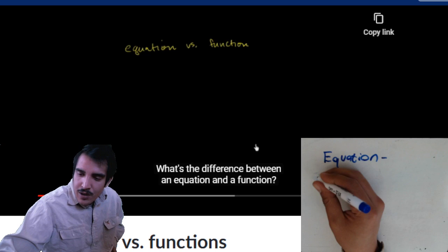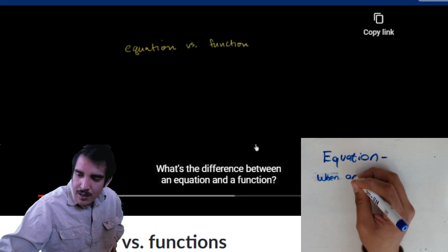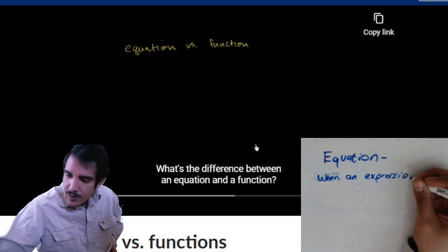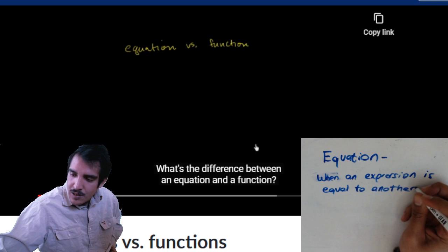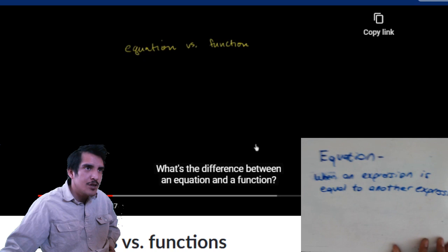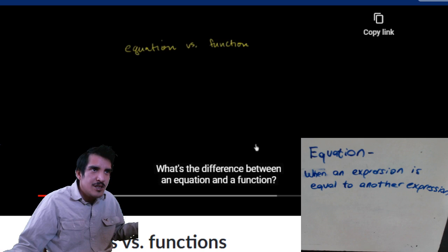An equation - I'm going to say an equation is when an expression is equal to another expression. We could look up the definition but I think that's true. So an equation is when an expression equals another expression.